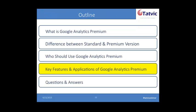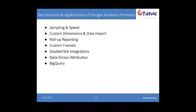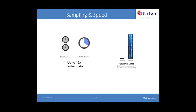Let's go ahead and jump into some of these key features, and as I'm talking about this, think about how it applies to your business and see if it's valuable. If it is, this could be an impetus for having a conversation about signing on to premium. The first one is sampling and speed. Premium has a lot more data, a lot more servers, and a lot more power put behind it than the standard version.